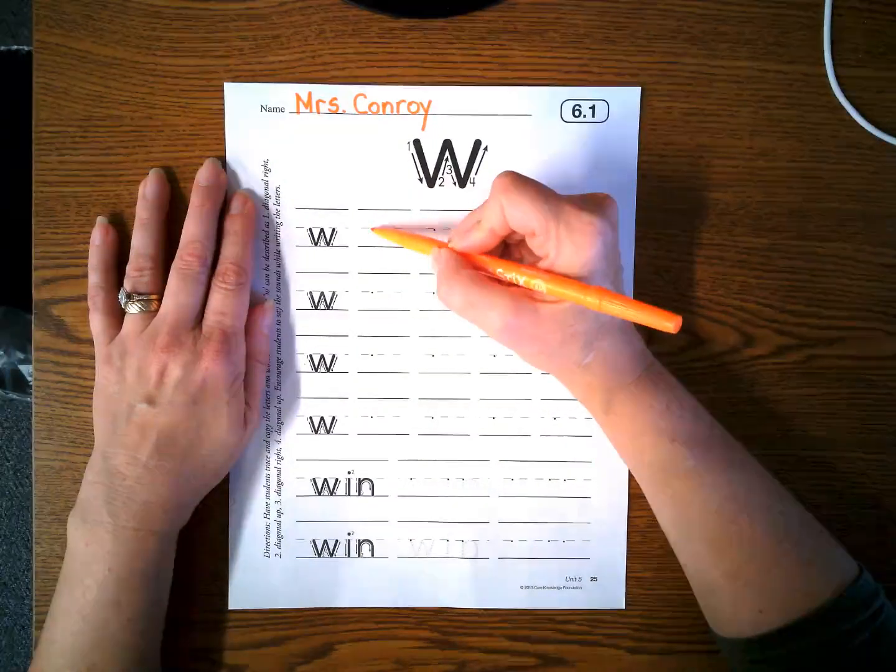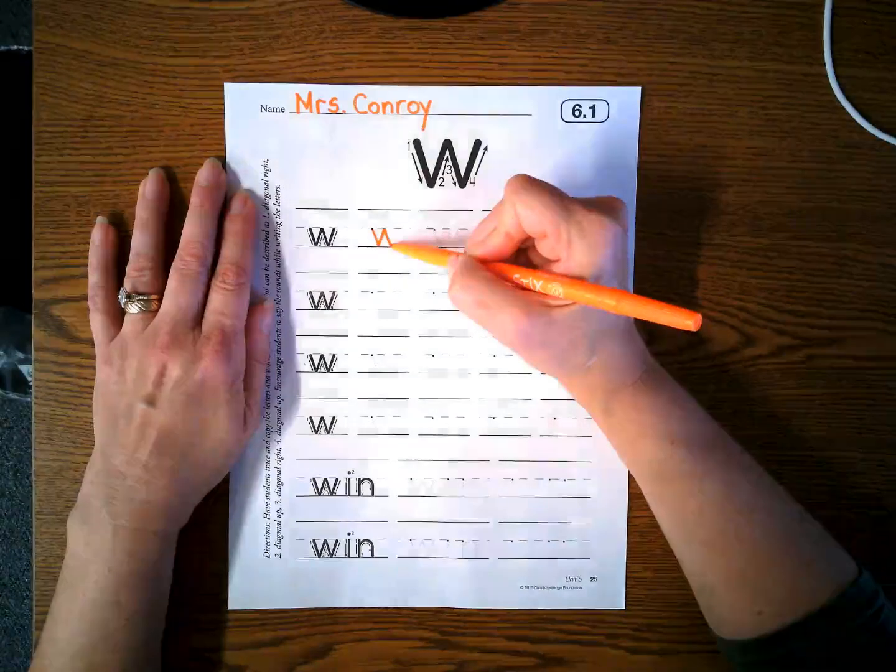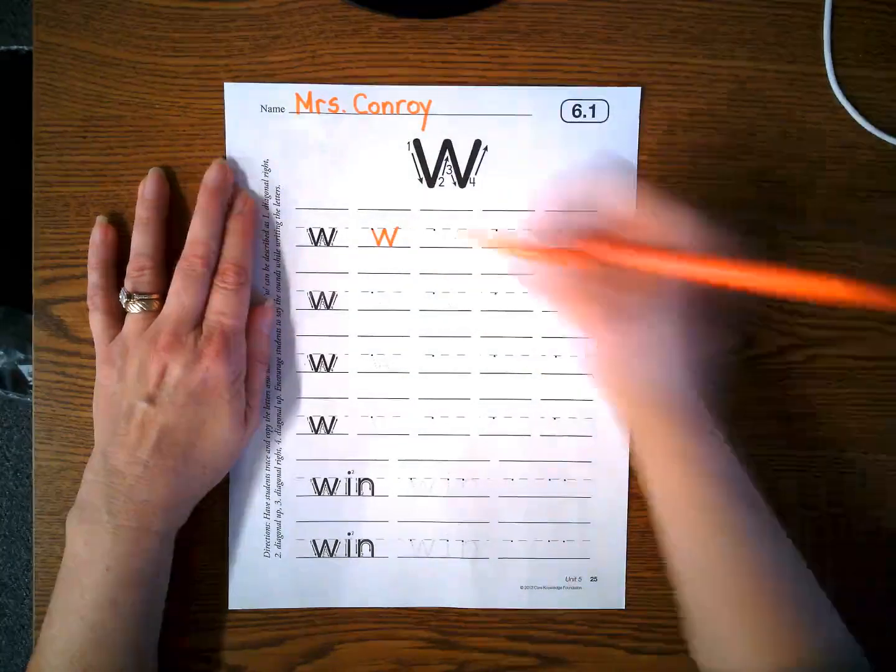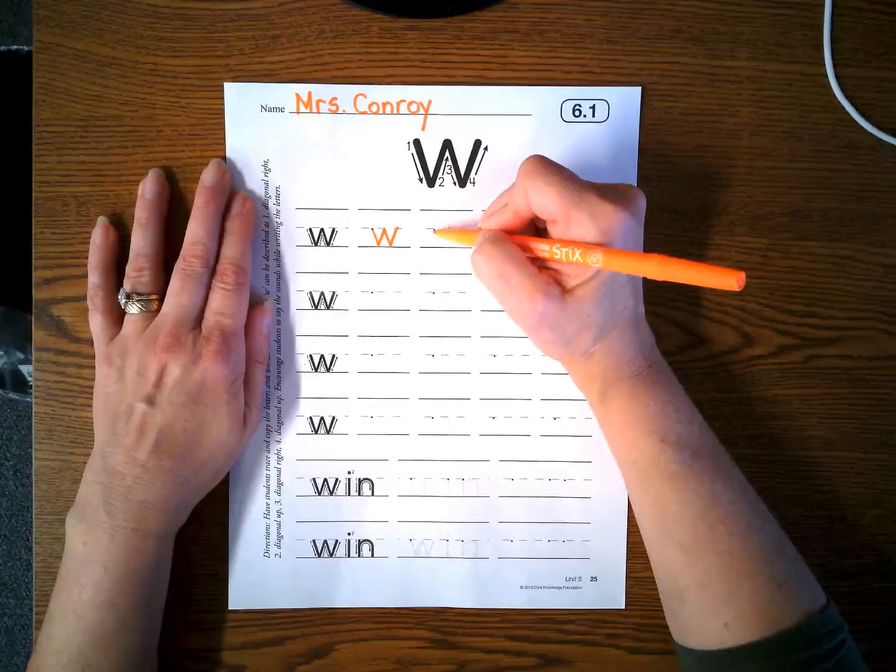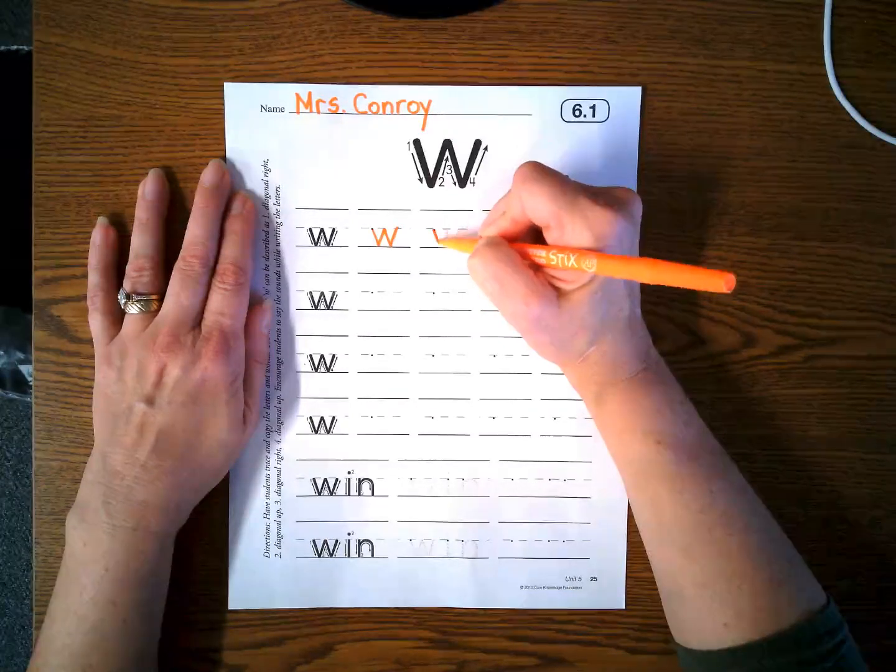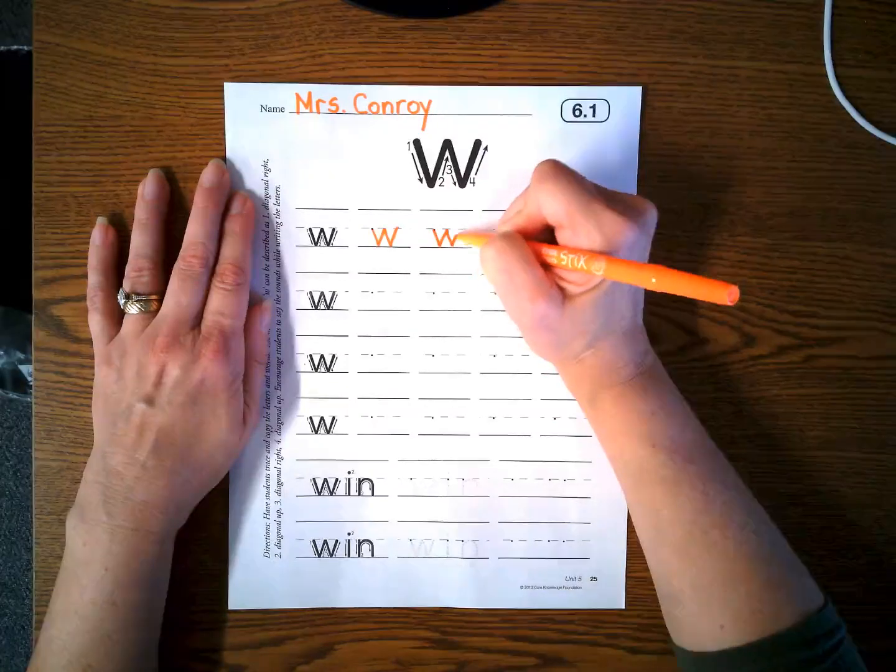Diagonal line, we're going down, up, down, up. Start at the dot, remember this is a lowercase w. Diagonal down, up, down, up.